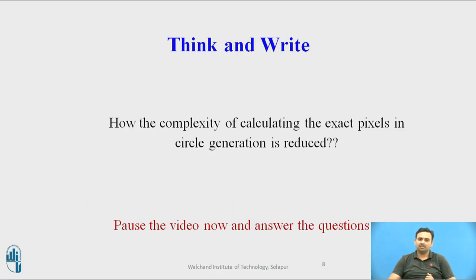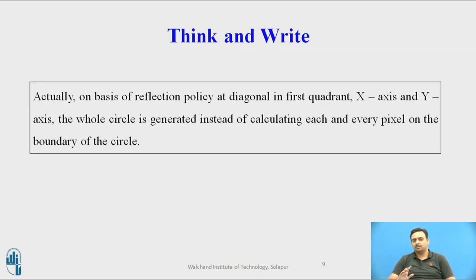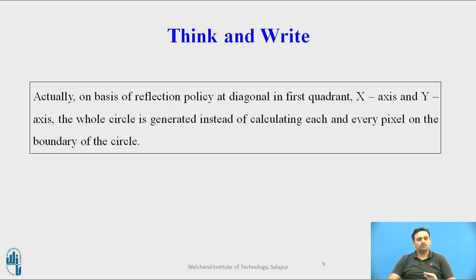How is the complexity of calculating the exact pixel in circle generation reduced? You don't need to get every pixel on the circle boundary. You just need to draw a circle in one quadrant, and then by using the reflection policy, the next pixels are obtained automatically. This formula reduces the complexity and the time of the algorithm.